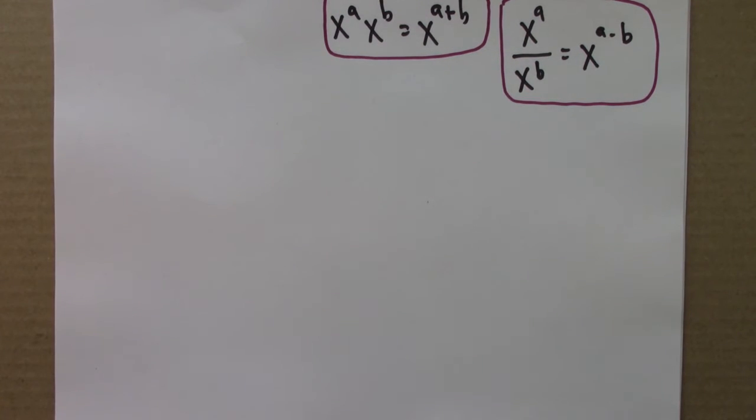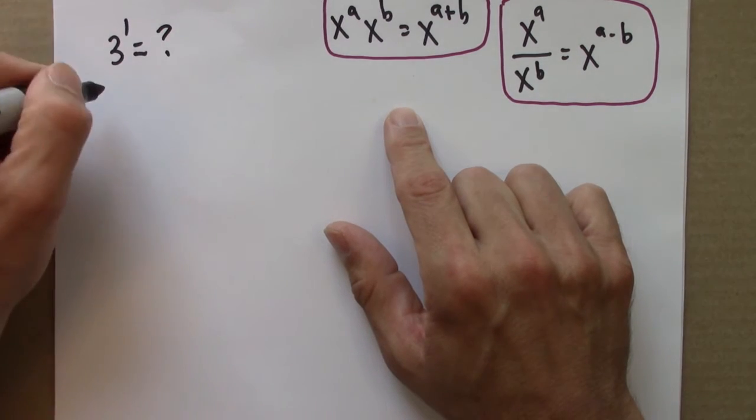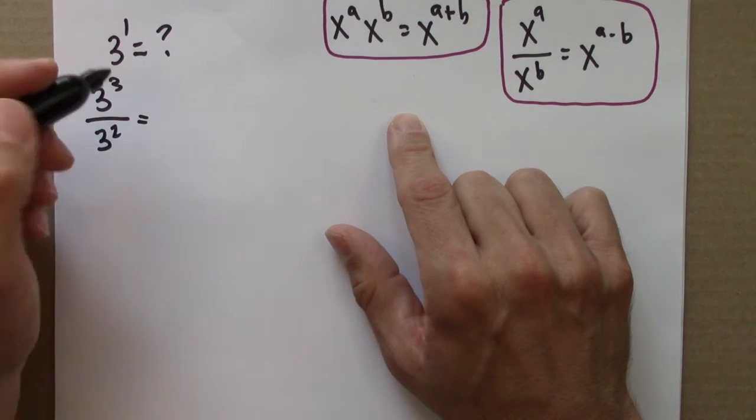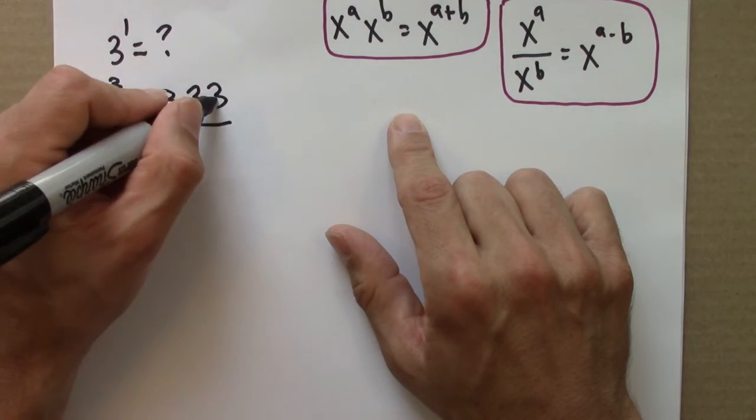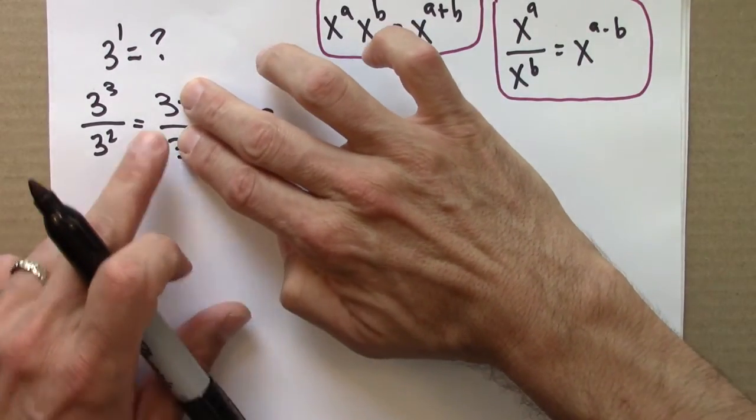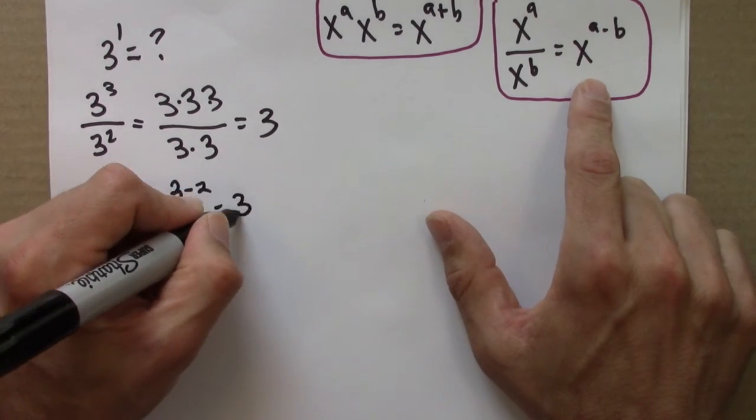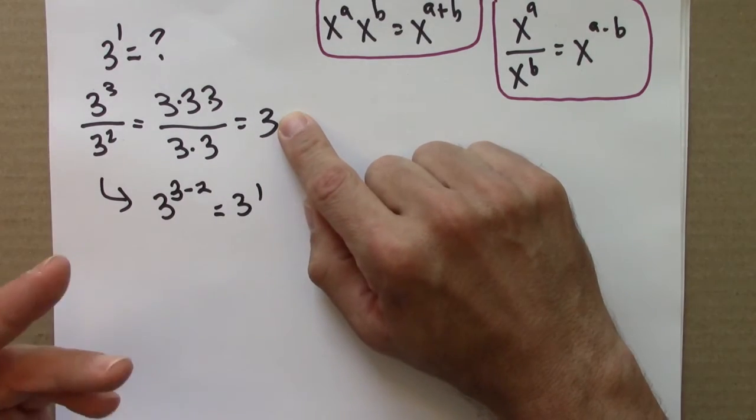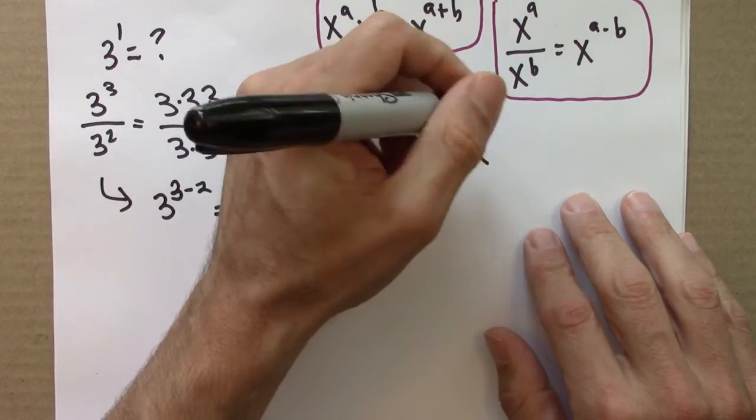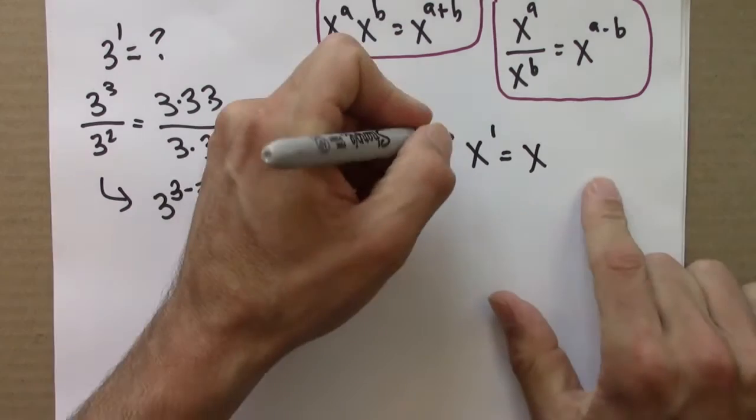So we have these two general rules for exponents, and these follow directly from the definition of exponentiation as successive multiplication. Let's consider two important special cases. First, what might 3 to the first power equal? So 3 to the 3 over 3 to the 2, that's 3 times 3 times 3 over 3 times 3, and that's just 3. I could also use this rule: this is 3 to the 3 minus 2, which is 3 to the 1. So 3 to the 1 is just 3. And that kind of makes sense—3 multiplied by itself 1 time seems like you'll be left with 3.